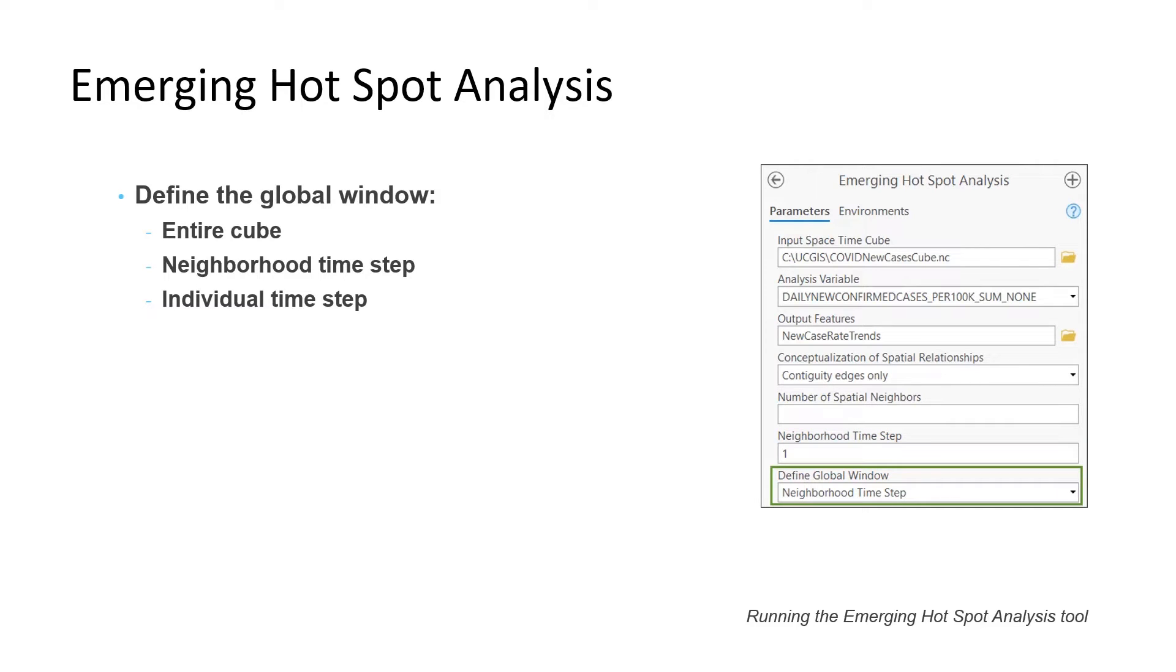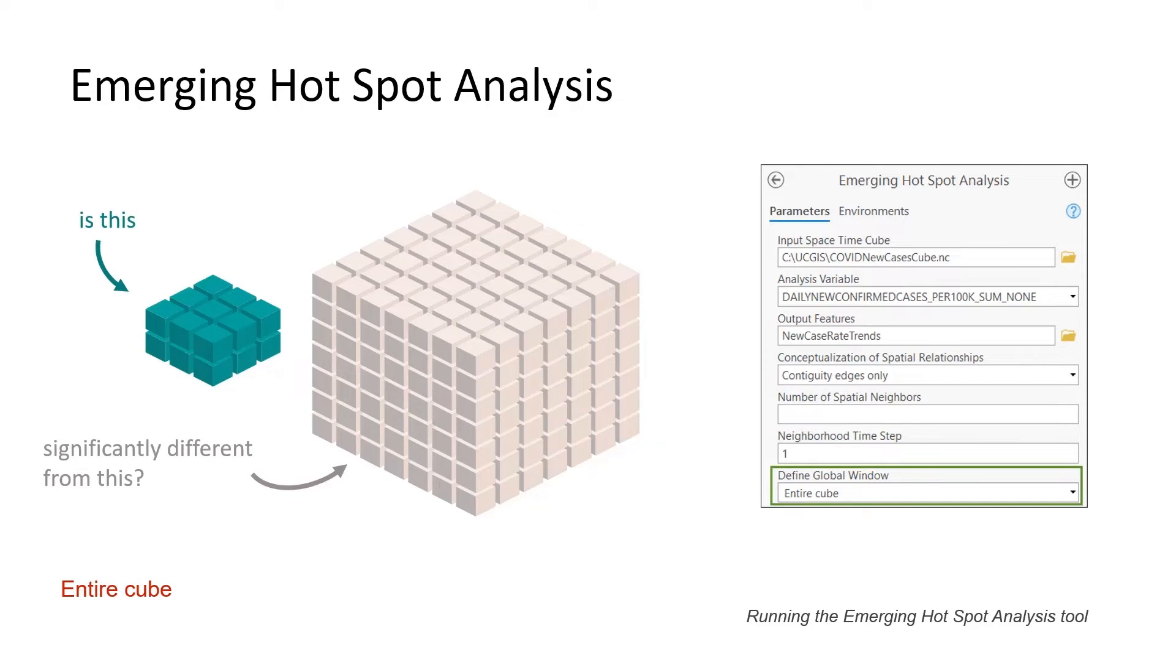Finally, you'll select the global window. I said the tool compares each bin and its neighboring bins to all bins in the cube. Well, I lied just a little bit. There are actually three choices for what the tool compares the neighborhood values to. The entire cube, the neighborhood time step, or the individual time step. When you choose entire cube, each bin and its neighbors are compared to all the values on all the bins for the entire cube. And this is generally not a good choice when there's a strong trend in the data like we have here.